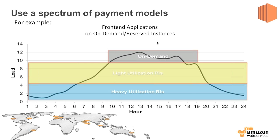What you see here is a typical enterprise application that picks up from about 7 a.m. and drops off at about 7 p.m. You'd reserve potentially four instances — that blue line there — to cover servers running through the night. Then for business work hours, you might purchase light reserved instances, another five. For peaks where usage is uncertain, you leverage on-demand instances, and you could also layer a medium in between or spot instances on top.